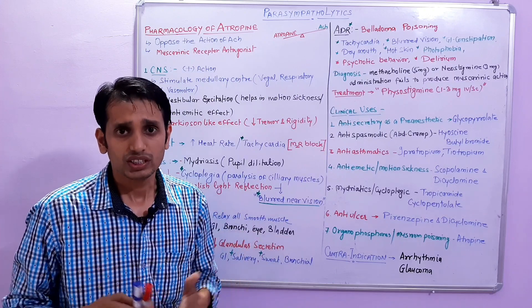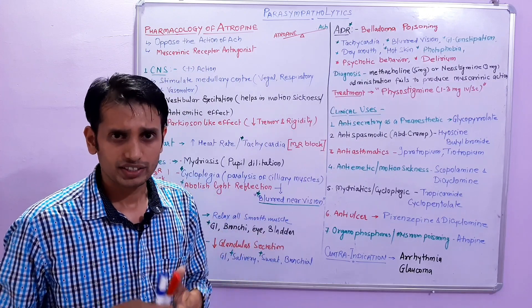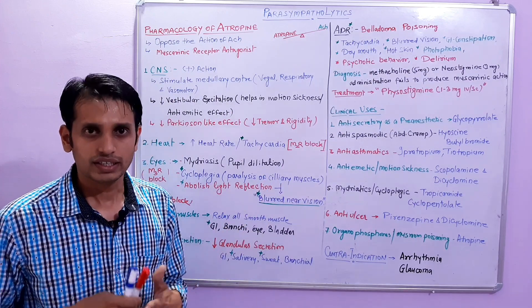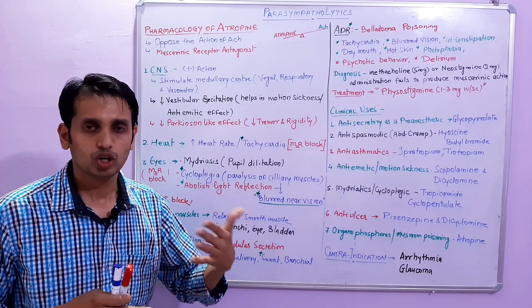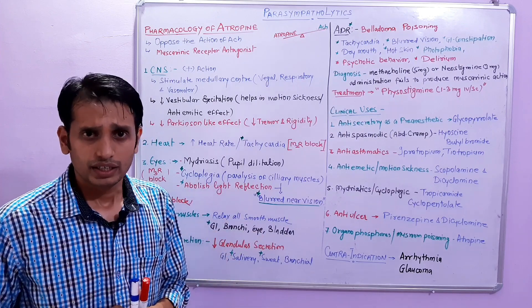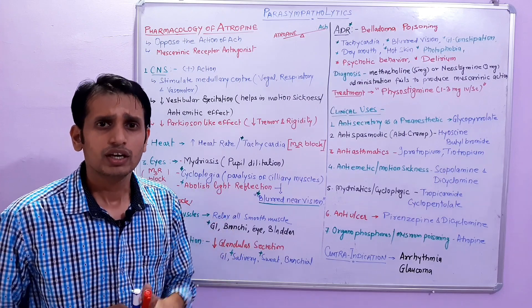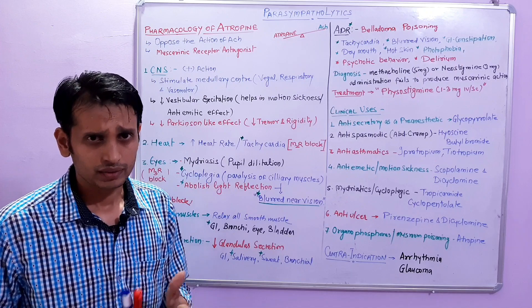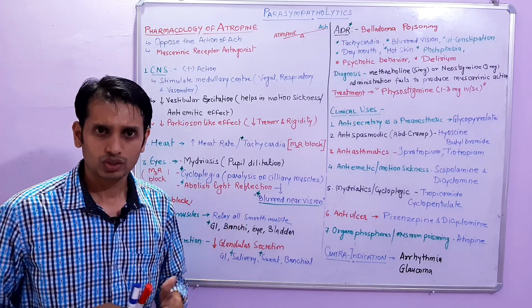Regarding glaucoma: cholinergic drugs decrease intraocular pressure (IOP) and are used as anti-glaucoma drugs, but anticholinergic drugs increase the IOP; therefore they cannot be used in glaucoma patients. These are the main features, pharmacological actions, and pharmacology of atropine and anticholinergic drugs. In the next video, we will discuss the differences between scopolamine and atropine.